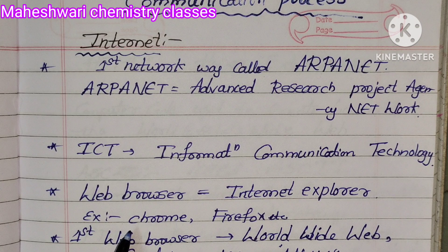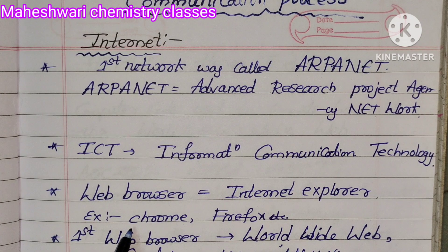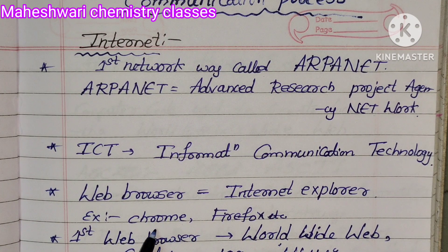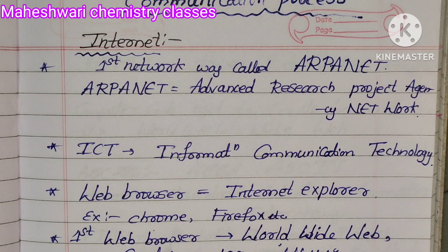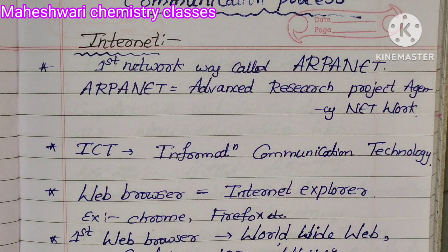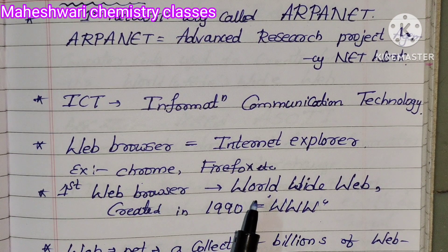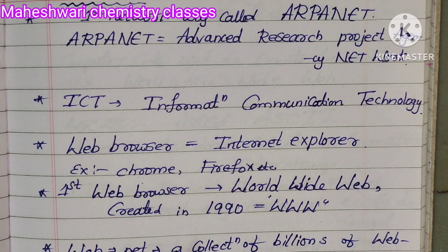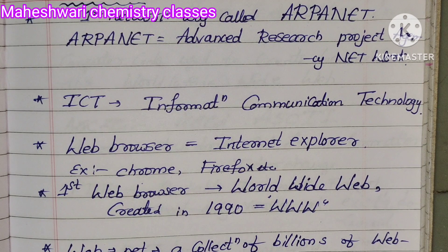You can also use Google Chrome and Firefox. The first web browser is called WWW. WWW means World Wide Web. It was created in the year 1990.